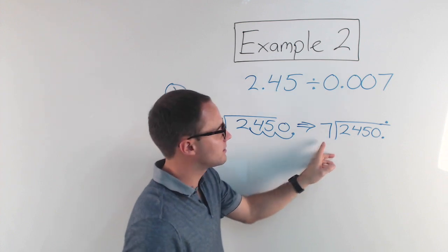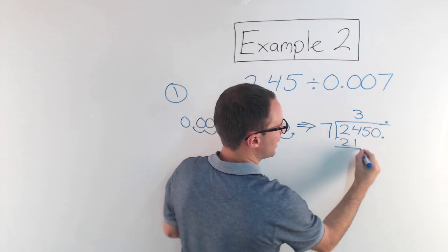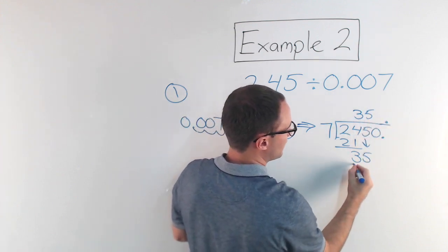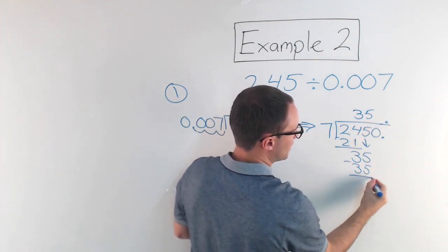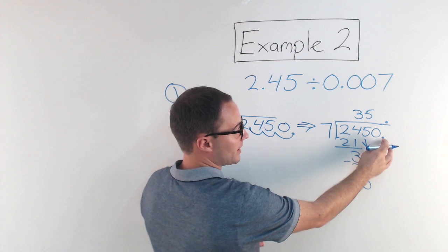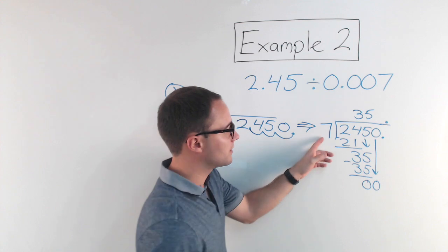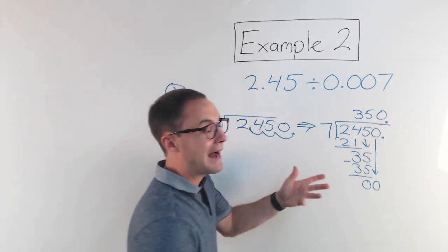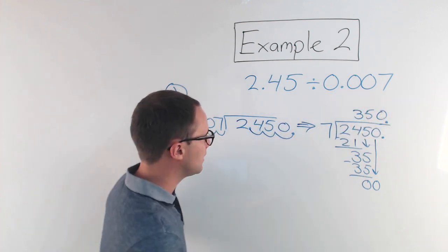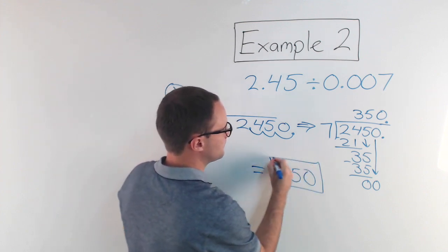Now it's just long division. 7 into 2 — no, that doesn't work. 7 into 24 goes 3 times, that's 21. Subtract, I get 3. Bring down the 5. 7 into 35 is 5, that is 35. Subtract, I get 0. But I'm not done because I still have a 0 to bring down — that's why it helps to have that decimal point there. Bring down the 0. 7 into 0 is 0. Now I am finished. So 2.45 divided by 0.007 is 350.